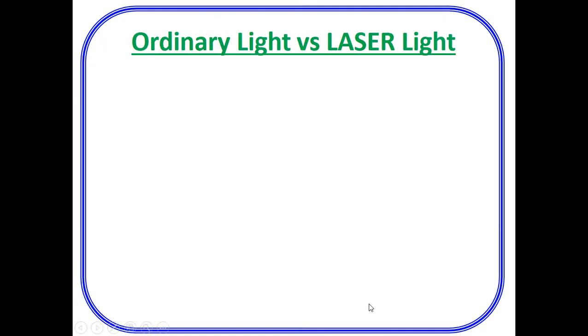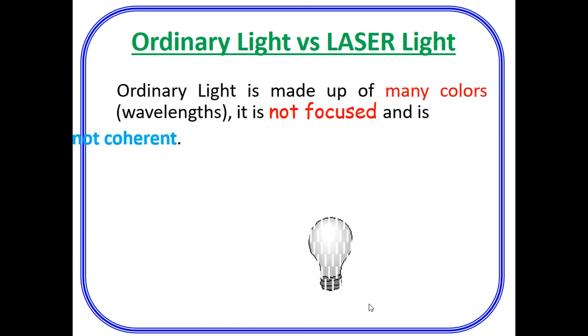Now let us see how the ordinary light is distinct from laser light. Ordinary light is made up of many colors, that means many wavelengths, and it is not focused as well as it is not coherent. As I have already told you previously, ordinary light which makes sense to our eyes contains wavelength between 4000 angstrom to 7800 angstrom, lights from violet to red color.